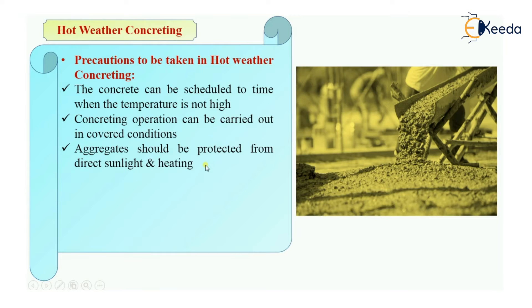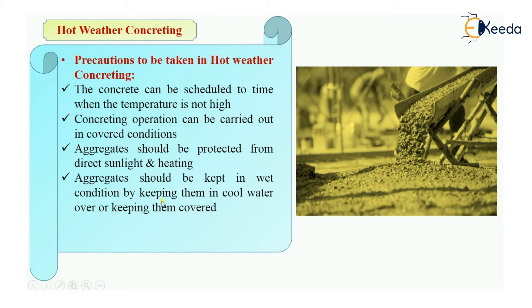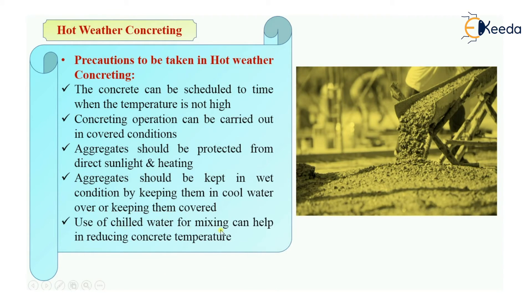Aggregates should be kept in wet conditions by keeping them in cold or cool water, or you can simply sprinkle water over them or keep them covered. You can also use chilled water or cool water for mixing, which will reduce the concrete temperature.